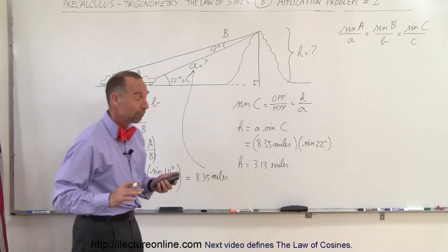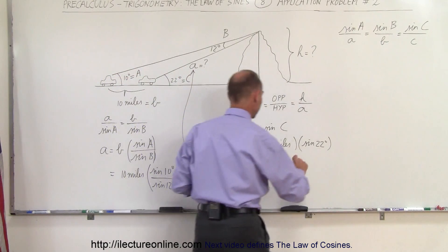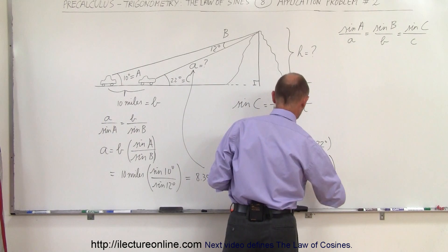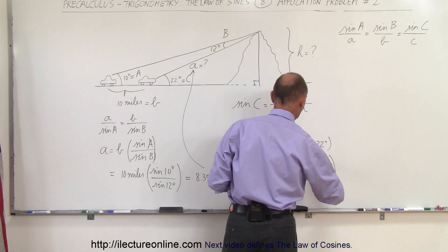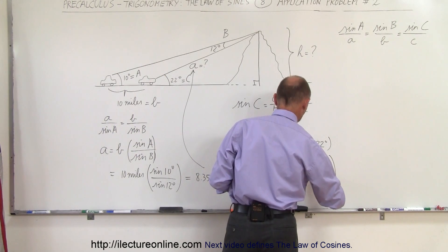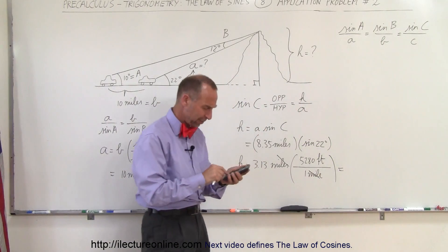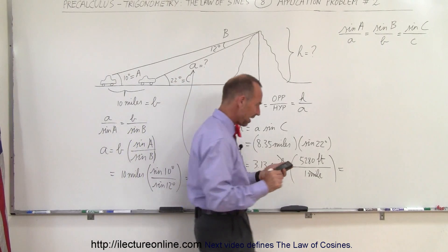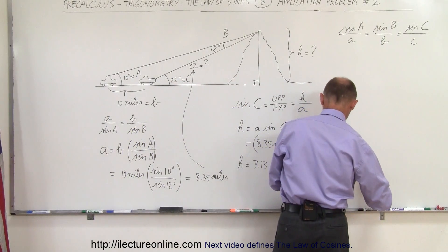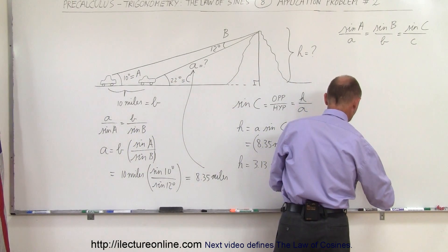If we convert that to feet, we have 5,280 feet per one mile. Miles cancel out, so times 5,280 we get 16,520 feet.